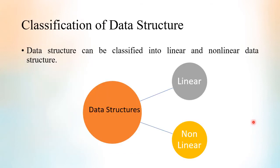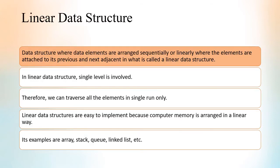Data structures can be classified into two: linear data structures and nonlinear data structures. In linear data structures, the data elements are arranged sequentially or linearly, there is only a single level, and we can traverse or access the elements in a single run. Linear data structures are easy to implement because computer memory is arranged in a linear way.